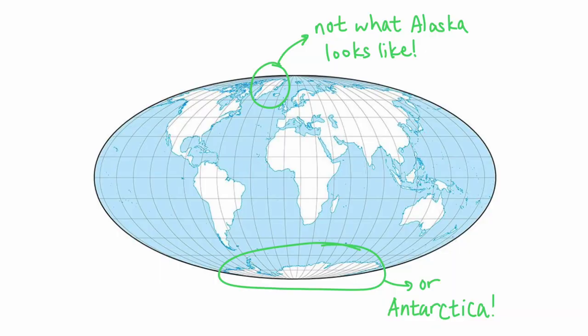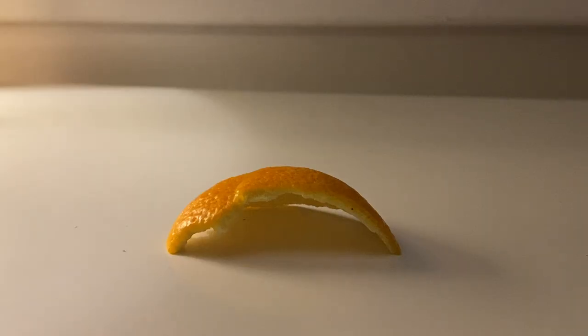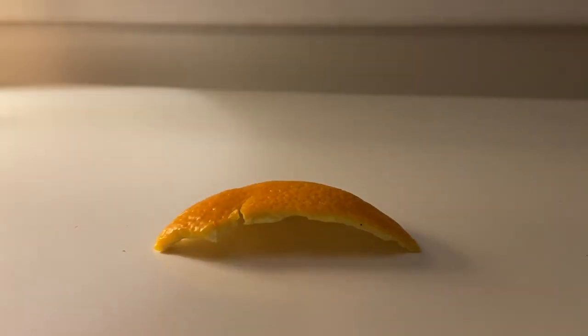A couple of other prominent consequences of this theorem is the fact that it's impossible to map out the earth without distorting the continents, and the fact that you can't flatten out an orange peel without tearing it. Trust me, I've tried.